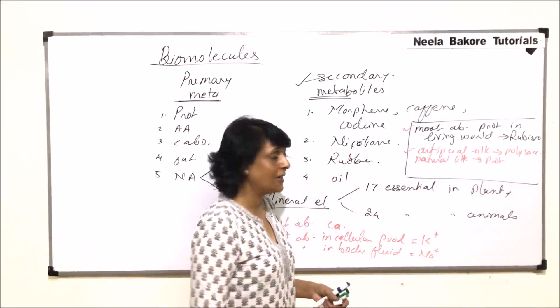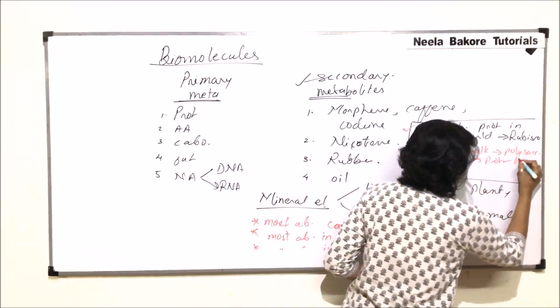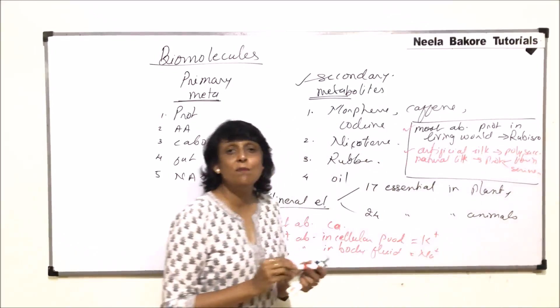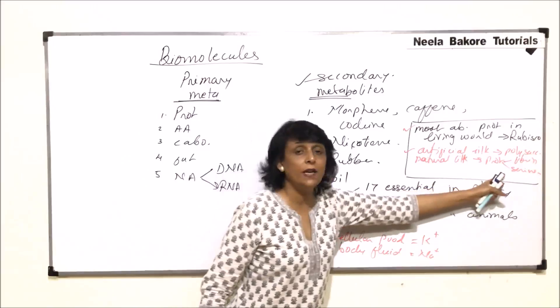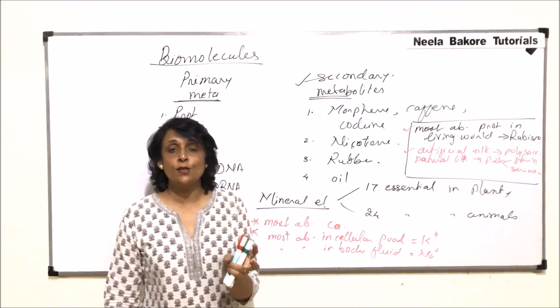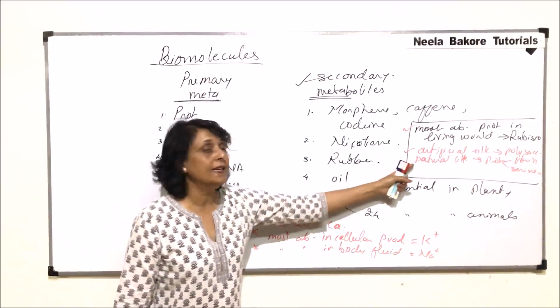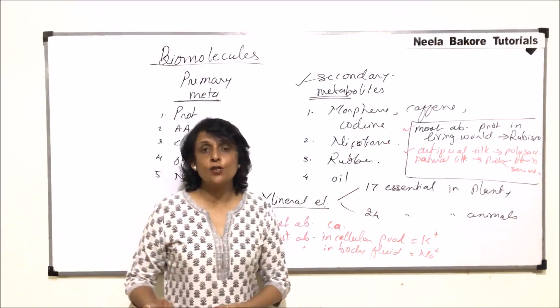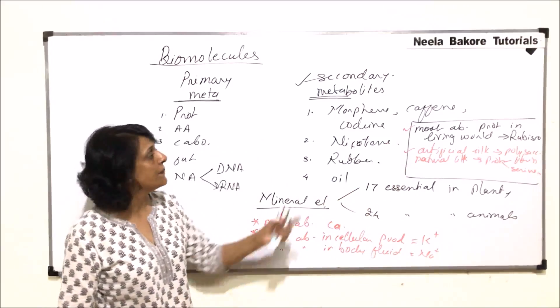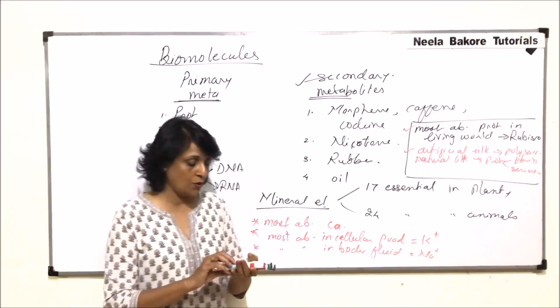And these proteins which are there, they are actually polyamides like fibroin and sericin. So these are important proteins which are found in silk fiber. So natural silk which is produced by the silk moth larva is a protein, whereas artificial silk which we synthesize in factories is a polysaccharide. And most abundant protein is Rubisco.